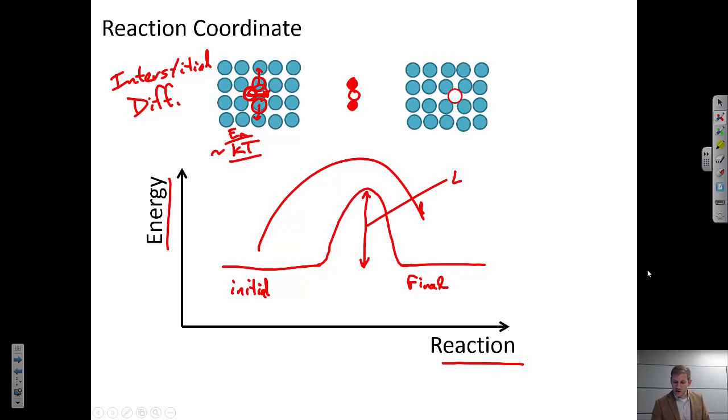So this term here is the activation energy. Sometimes it's also called a heat of some sort of reaction, heat of vacancy creation, heat of diffusion. So you can see different variables used to describe this. But this is the magnitude of that energy barrier we have to overcome. So if E sub A is smaller, it's more likely to happen. If the temperature is higher, it's also more likely to happen.